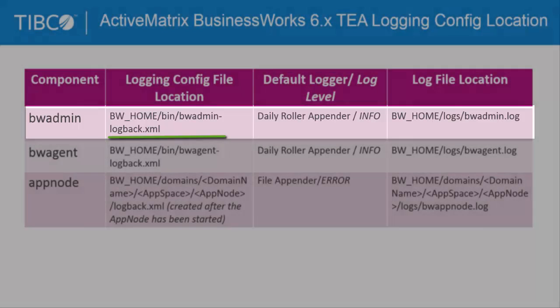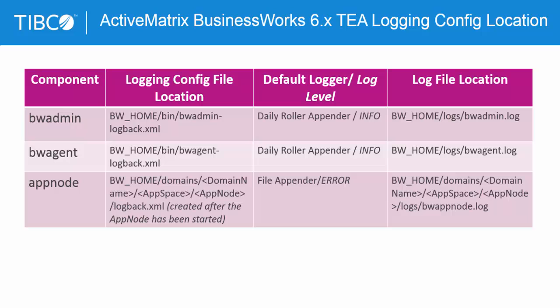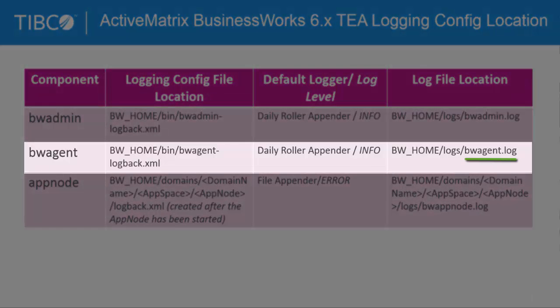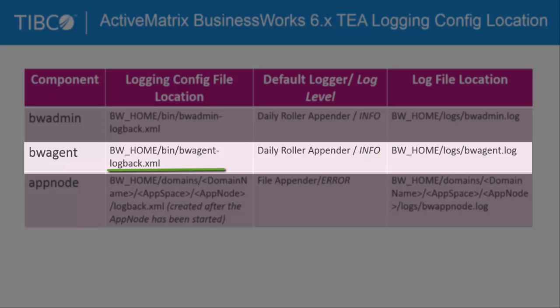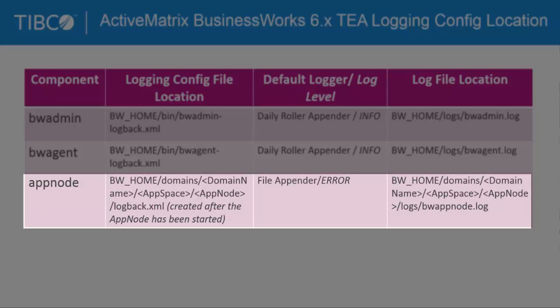The BWAgent, when started, creates a log file called bwagent.log that is saved in the BW_home/logs folder. The default logger is daily roller appender and the log file is automatically compressed as a zip file. The default logging level is info. The logback configuration file is BW_home/bin/bwagent-logback.xml.